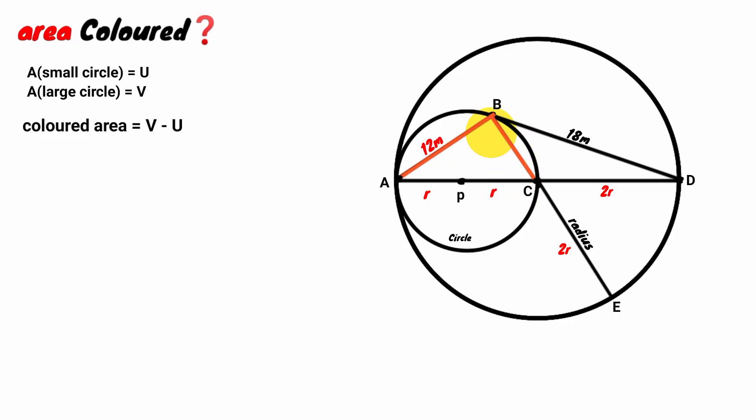Look at this angle here — it is subtended by arc AC, which is a diameter of the small circle. We know that the angle subtended by a diameter of a circle to its circumference is the angle of a semicircle, which is a right angle. So this angle is a right angle.